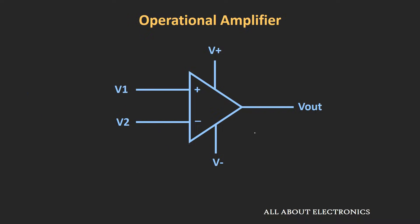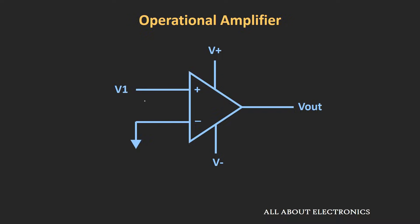This operational amplifier is one kind of differential amplifier with a single output, meaning it amplifies the difference between the two input signals. So if V1 and V2 are the input signals and A is the gain, then the output will be equal to A times (V1 minus V2). If we apply a single input and ground the other terminal, the output will be A times V1, where A is the open loop gain — the gain when there is no feedback from output to input.